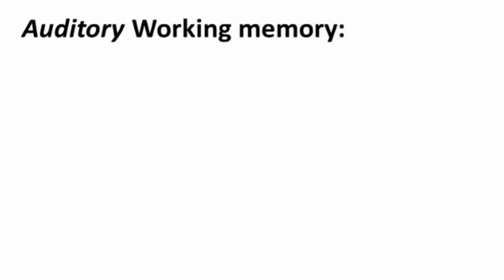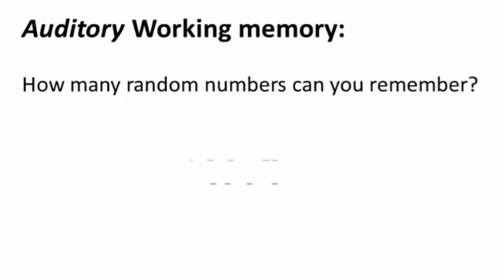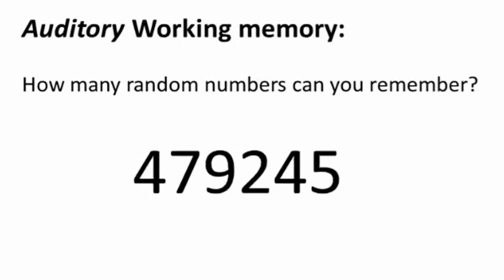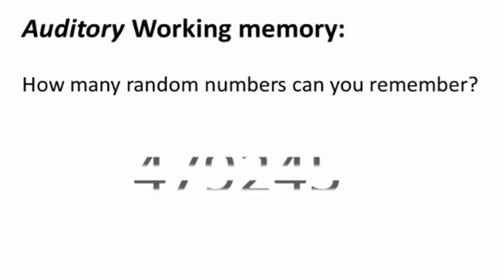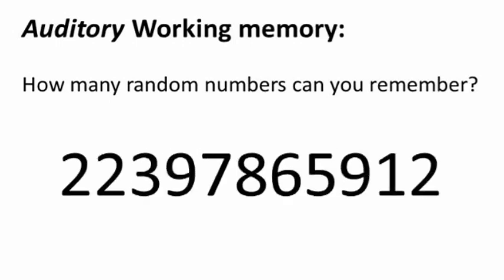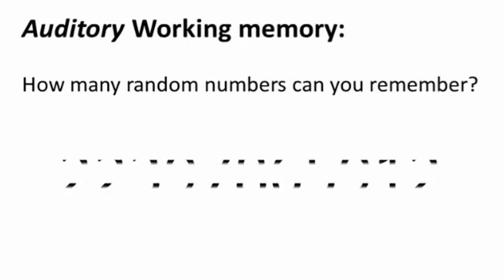Let's look at auditory working memory. If these numbers come up for a short period of time, almost all of us can remember that it was 361. But as we increase the number of random numbers, we reach a point where we can't remember them. And that is our working memory capacity.